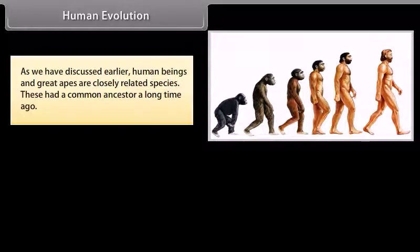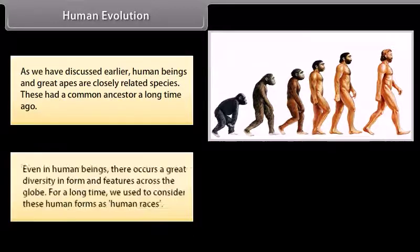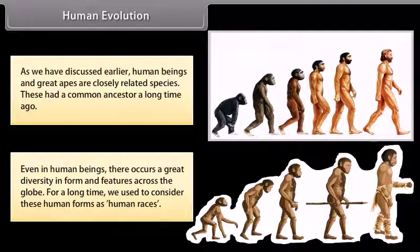Human evolution: As we have discussed earlier, human beings and great apes are closely related species. These had a common ancestor a long time ago. Even in human beings, there occurs a great diversity in form and features across the globe. For a long time, we used to consider these human forms as human races.